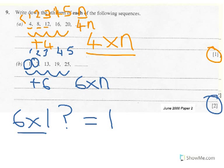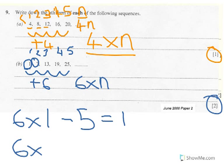So 6 times 1 would be 6. I would then have to take away 5. So if I take away 5, I would get 1. Now let's test that. Let's do it with the second term in the sequence. So that would be 6 times the second term in the sequence. So that's the second number. Take away 5. Do I get 7? 6 times 2 is 12. Take away 5. 7.